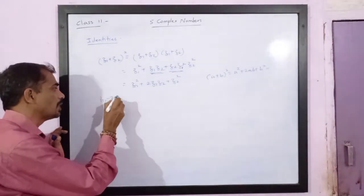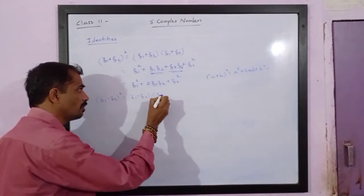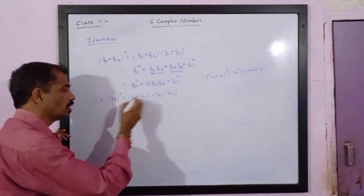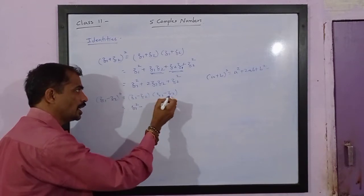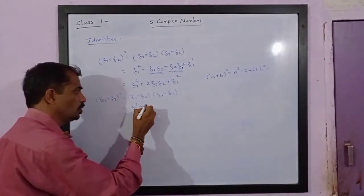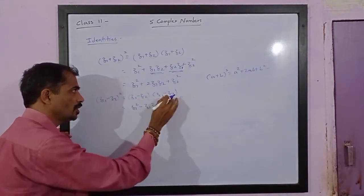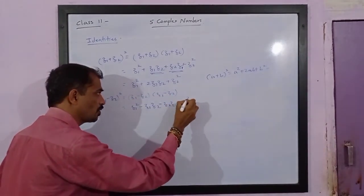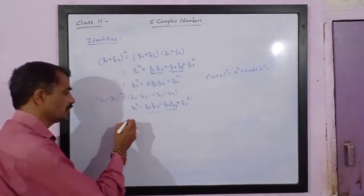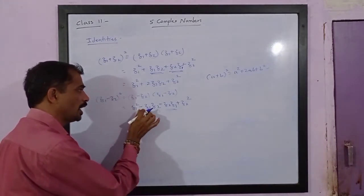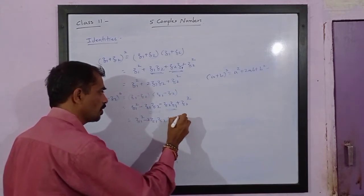Now let us consider (z1 - z2)². This is equal to (z1 - z2)(z1 - z2), which gives z1² - z1z2 - z2z1 + z2². Since z1z2 = z2z1, the two middle terms combine, and we get z1² - 2z1z2 + z2².